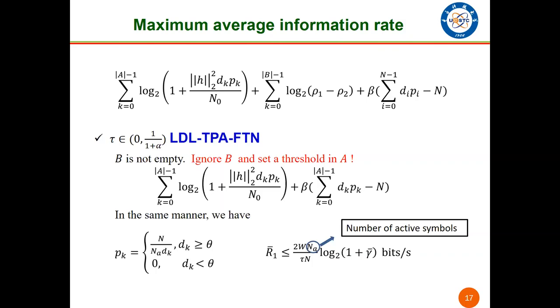Recall the Lagrange function. When tau is in 0 to 1 over 1 plus alpha, there may exist some 2 by 2 blocks in D, which makes it troublesome to solve the Lagrange function. Since the elements in 2 by 2 blocks are asymptotically zero, we propose to ignore the second term and use a threshold to maintain some active symbols for transmission. In the same manner, we eventually have P_k equal to N over N_active times d_k. And N_active is the number of active symbols.